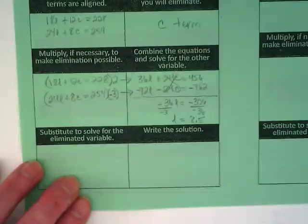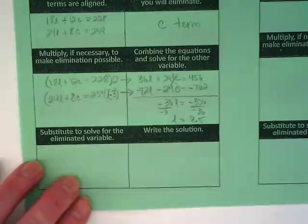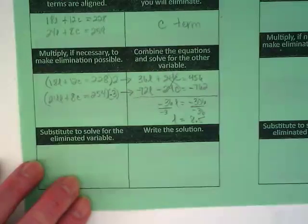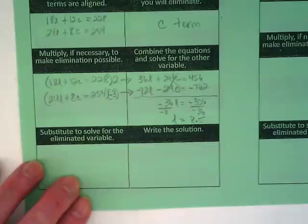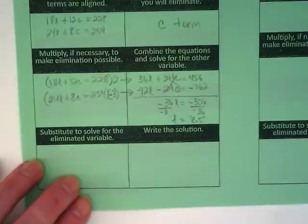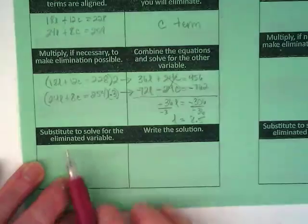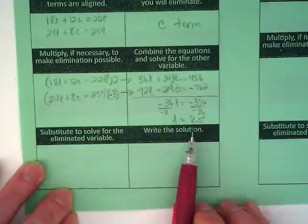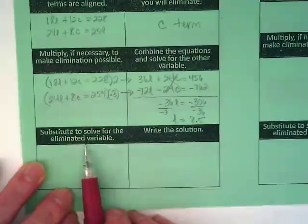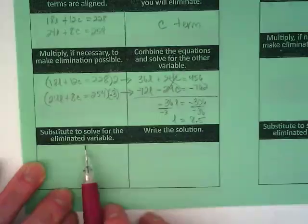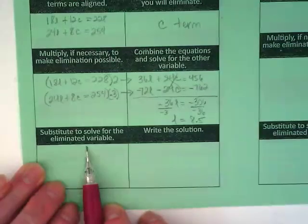Now, this is the main reason we learn substitution before we learn elimination. Because you cannot finish elimination without using substitution. Because our next step is to take what we learned and substitute it to solve for the other eliminated variable. So we're going to find out what C is now.